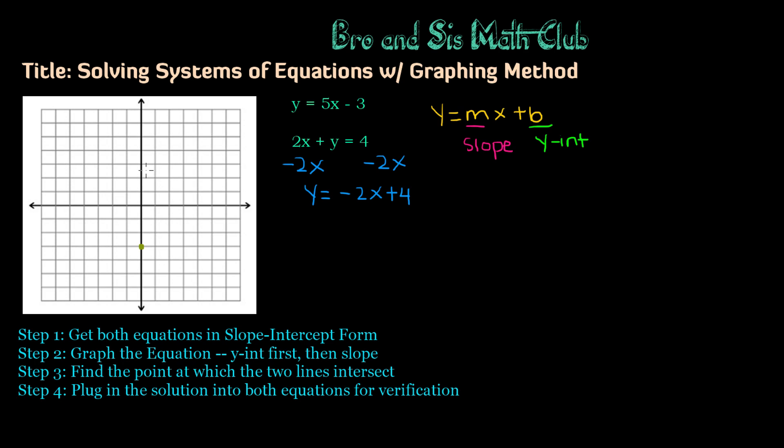So we would go 1, 2, 3, 4, 5 up, and then 1 to the right, because 5 is the same thing as 5 over 1, which is rise over run. So that's our first point, and then we go up 5 again, 1, 2, 3, 4, 5, and then 1. And we can go down, so that's all the points that we can plot on this graph.